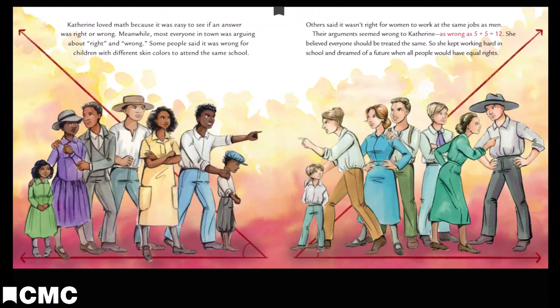Catherine loved math because it was easy to see if an answer was right or wrong. Meanwhile, most everyone in town was arguing about right and wrong. Some people said it was wrong for children with different skin colors to attend the same school. Others said it wasn't right for women to work at the same jobs as men. Their arguments seemed wrong to Catherine, as wrong as 5 plus 5 equals 12. She believed everyone should be treated the same, so she kept working hard in school and dreamed of a future when all people would have equal rights.